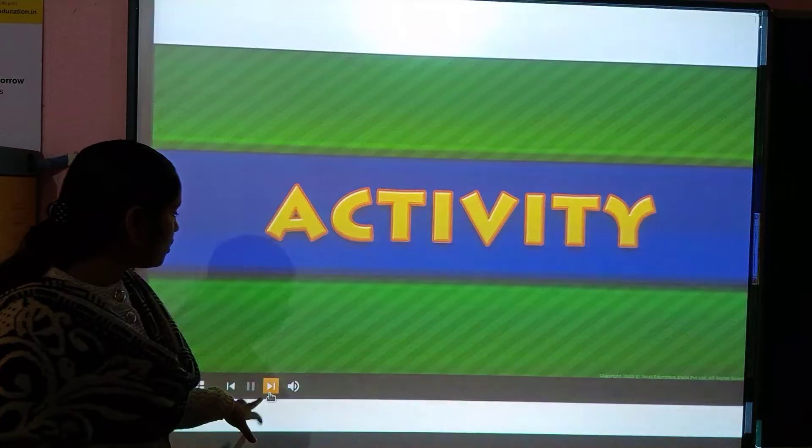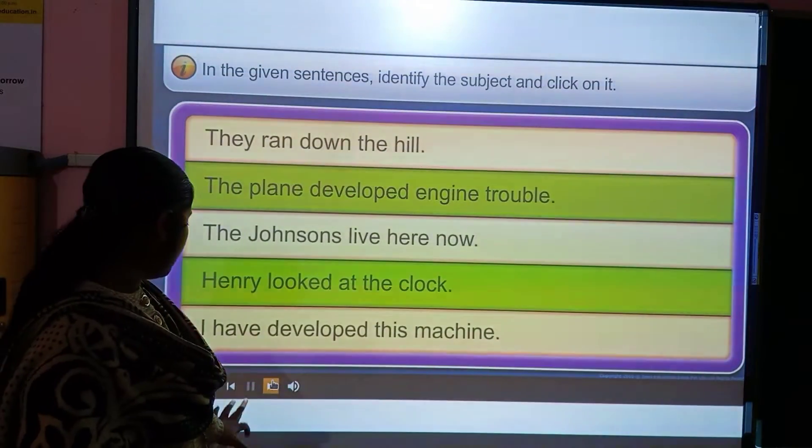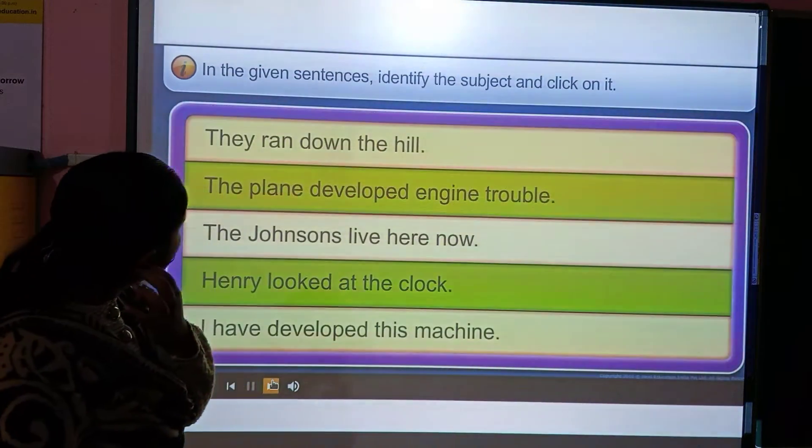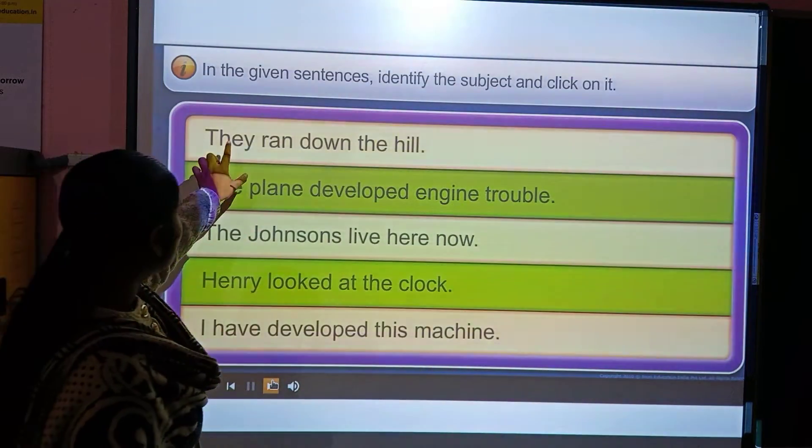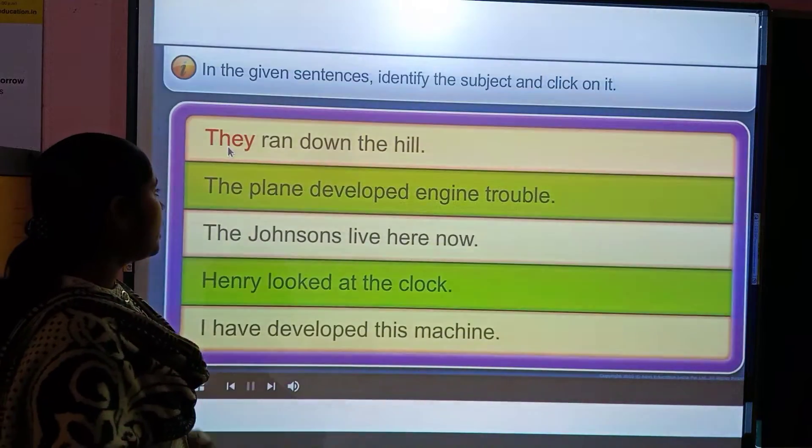Moving onwards, so this was the activity. Now, in a sentence, they will identify the subject and click on it. They ran down the hill. So, they ran down the hill.